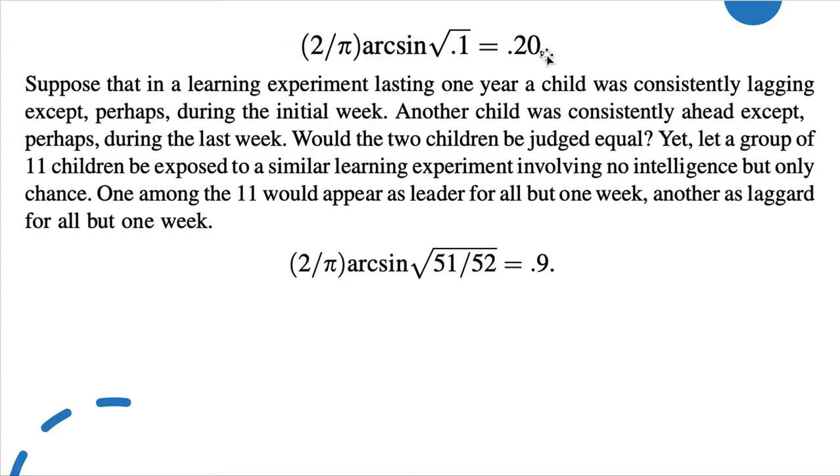Feller's point is that common opinion would most probably judge the second student as better than the first. However, by the very nature of chance, even if the two children were equally good, one would be ahead of the other for 51 weeks with probability approximately equal to (2/π)arcsin(√(51/52)), which gives 0.9. Thus out of 11 equally good students, we would expect approximately one to be ahead for all but the last week, as we would expect approximately one to be lagging for all but the last week.